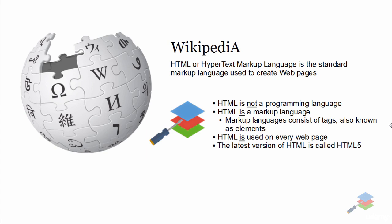HTML is used on every single web page. If you've ever gone to Twitter, Facebook, Google, or really any website — even websites that have Flash on them, such as YouTube — it still uses HTML to embed that Flash. The latest version is called HTML5. But to sum all of this up, HTML is really the backbone structure of how everything is designed on a web page.